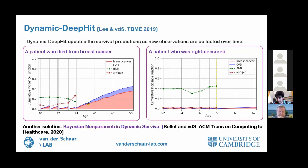Other methods can be built — for instance, a method built not on deep learning like dynamic deep hit, but rather on Bayesian non-parametric survival models.